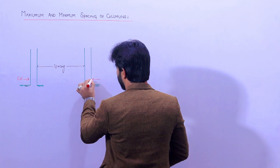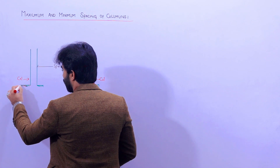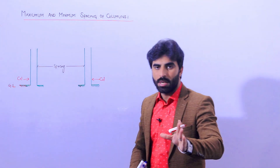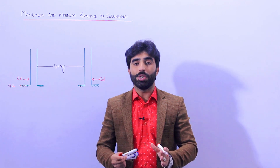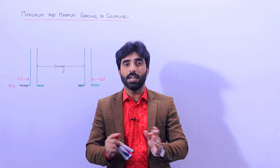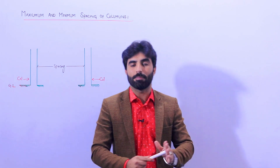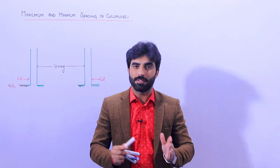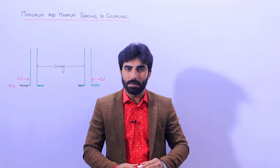As you can see, these are two columns — this is one column and this is the other column. This is GL, ground level. What should be the spacing between two columns? For a normal residential building or commercial building, we don't have any specific spacing because everything depends on the structural load of the building, and the structural load depends on the bearing capacity of the soil. We have different types of soil with different bearing capacities.